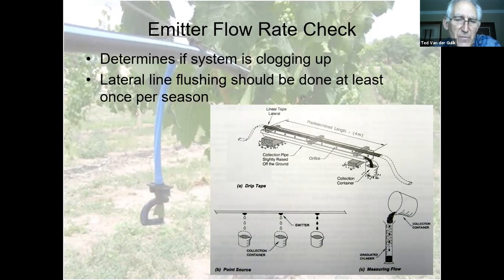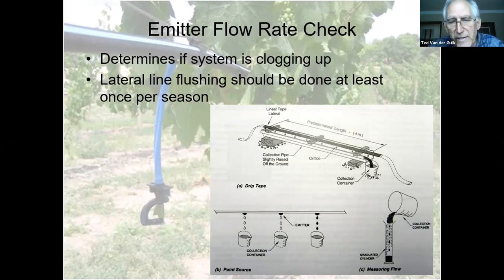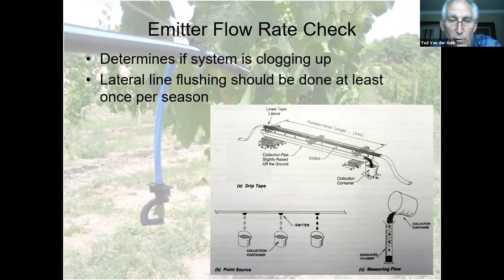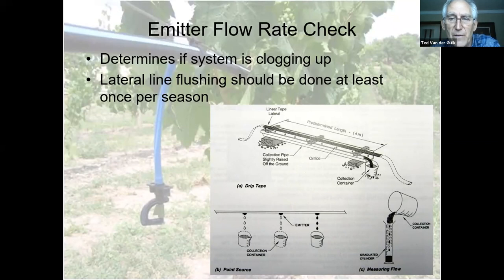For a tape system, get a section of tape operating for 15 minutes into a funnel to collect output. For a drip system, put little containers underneath the emitters and monitor the flow rate. Each emitter will have a rated flow — for example, a 2 liter per hour emitter: run it for 15 minutes and see what you're collecting. If it's not 2 liters per hour, your system is starting to clog. Emitters always start to plug towards the end of the lateral line, so flush your lines at least once a year.